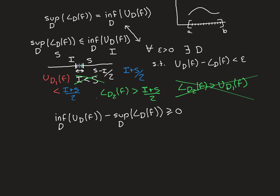There are two more inequalities we already know to be true that we'll use along with those results. First, the infimum of all upper Riemann sums is less than or equal to the upper Riemann sum over any specific dissection D-bar. That's just by definition — the infimum is the greatest lower bound, so it is a lower bound, and is less than or equal to everything inside that set, including this specific upper Riemann sum.